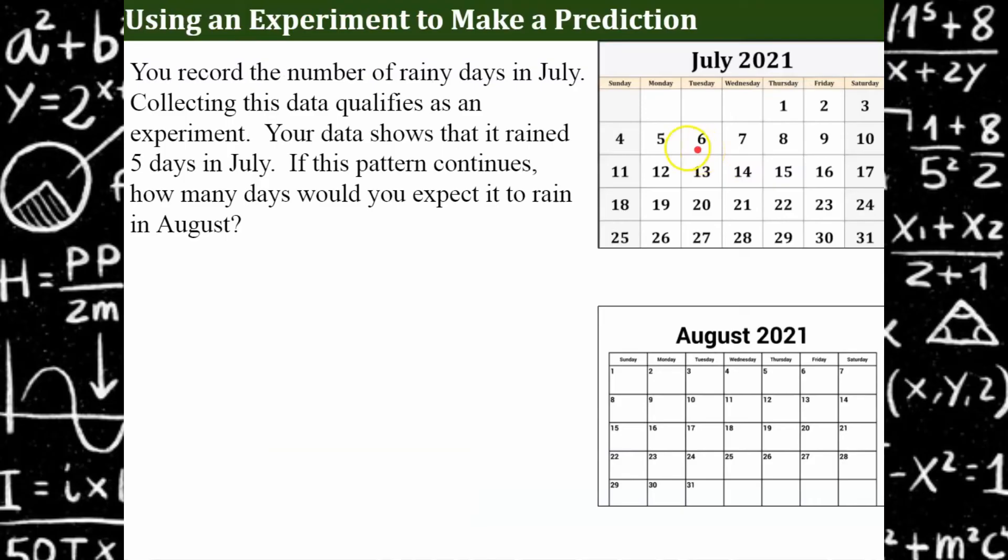Now we can use an experiment to make a prediction. We record the number of rainy days in July. We collected the data and that qualifies as an experiment. The data we collected show that it rained five days in July. If this pattern continued, how many days would you expect it to rain in August? I gave you a calendar so that you can see the total number of days in July and in August is the same.